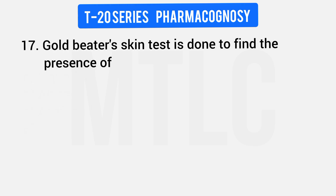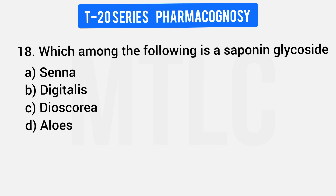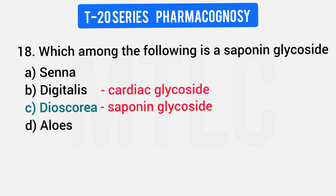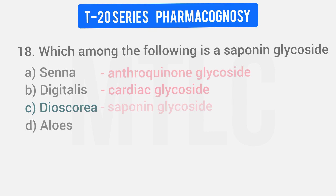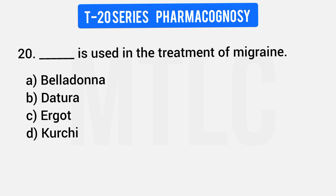Question 17: Gold beater skin test is done to find the presence of tannins. Question 18: In 4 drugs, which is a saponin glycoside? Digitalis is a cardiac glycoside. The answer is Dioscorea, which contains saponin glycoside. Question 19: Rauwolfia is which type of alkaloid? Options: Indole, Isoquinoline, Purine, Tropane. Rauwolfia is an indole alkaloid. Question 20: Which drug is used in the treatment of migraine? The answer is Ergot.